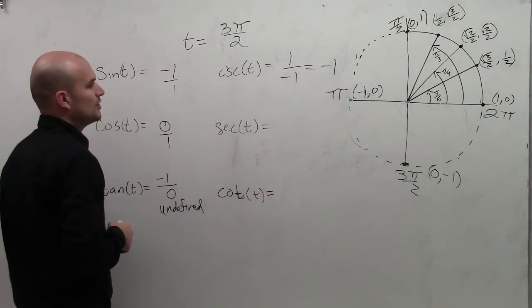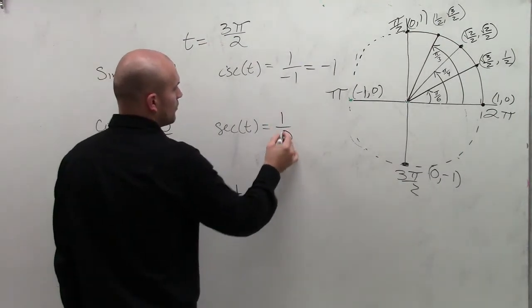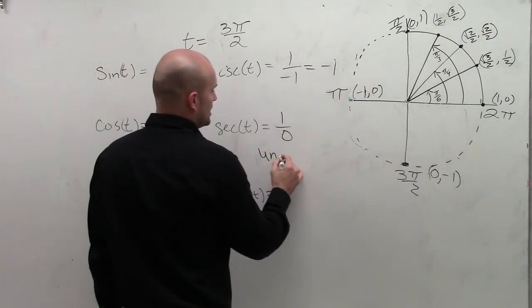For secant, if we reciprocate, we have 1 over 0, which is undefined.